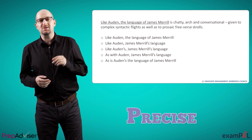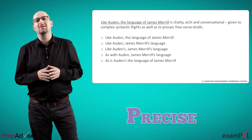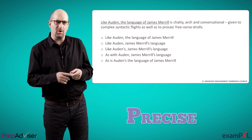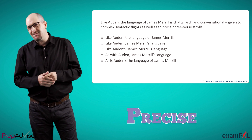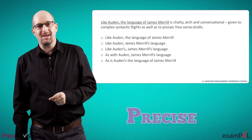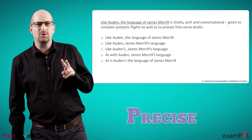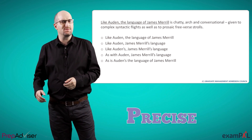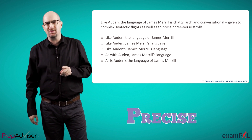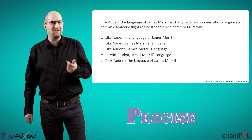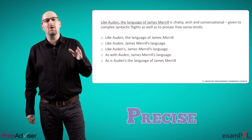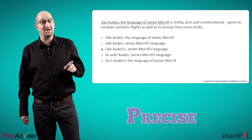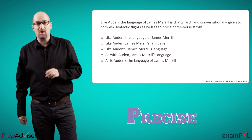This question exemplifies something called parallelism. This means that when there's a connection between parts of the sentence with the same function — verbs, pronouns, clauses, etc. — they must have the same form. Here, the underlined section makes the mistake of creating a parallel between two things which are fundamentally different: a person, Auden, and a language, that of James Merrill. As the rest of the sentence is clearly referring to a language and not to a person — chatty, conversational, syntactic — we know the correct answer must refer to Auden's language. This is exactly what answer choice C does. By adding a possessive apostrophe S, we have a parallel.